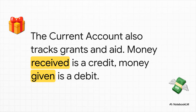It's not just about buying and selling things. Stuff like foreign aid also gets tracked here. If our country gets a grant from another nation, that's money coming in — a credit. And if we give aid to someone else, that's money going out — a debit.